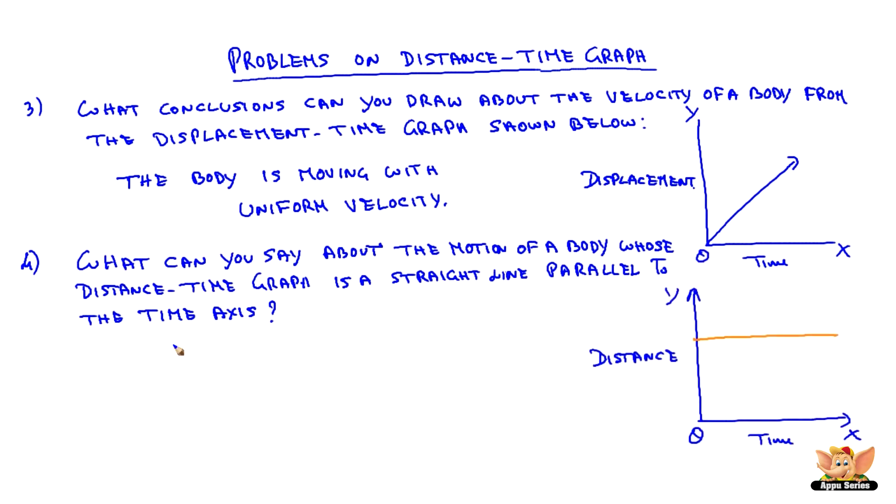Graph is a straight line parallel to the x-axis. So it means that the distance is constant at any point of time. So the time is varying, but the distance remains constant. It means the body is not moving. It is stationary.